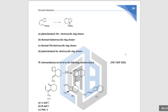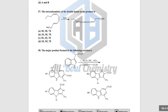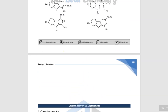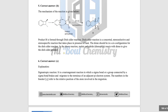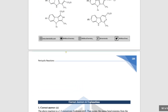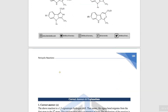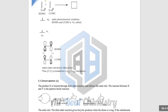For topics like Pericyclic Reactions, questions are separated from the solutions. You first have all the questions, then the answers — so you can solve them on your own without seeing the answers, mark your responses in the ebook, and then go to the solution section to check whether you are correct.